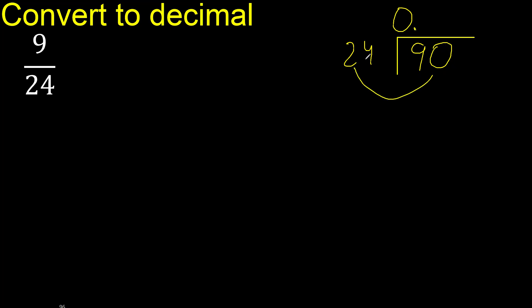90 is not less than 24, therefore 24 multiplied by which number is nearest to 90 but not greater. Multiplied by 5 is 120, is greater.